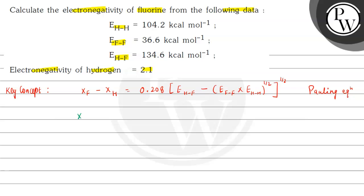So here, electronegativity of fluorine minus hydrogen's electronegativity given 2.1 equals 0.208 multiplied by the values here. E_HF is 134.6 minus E_HH is 104.2 multiplied by E_FF is 36.6 to the power 1 by 2, whole power 1 by 2 here.